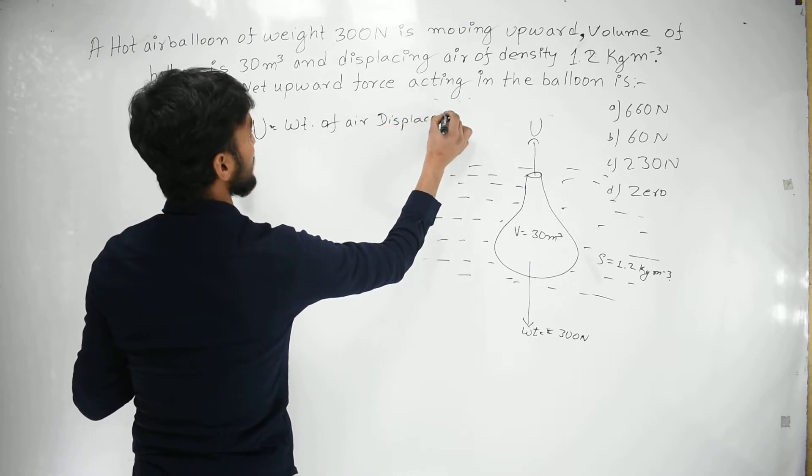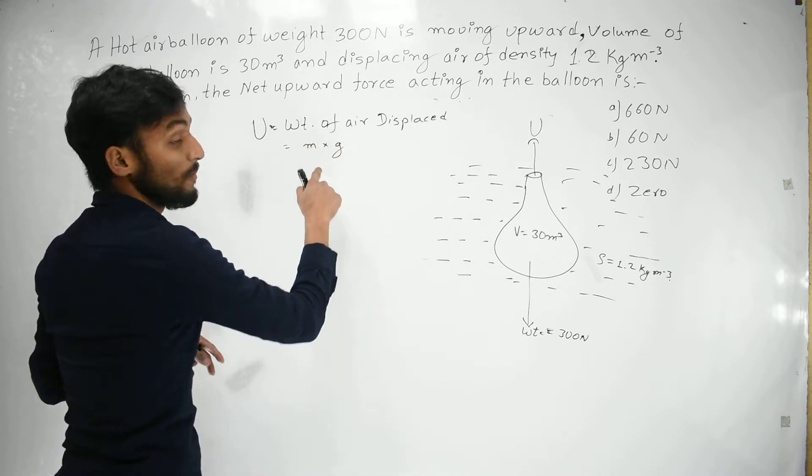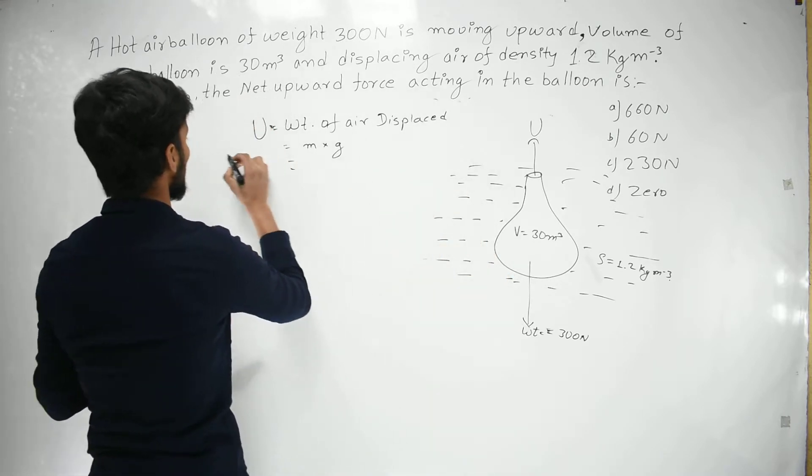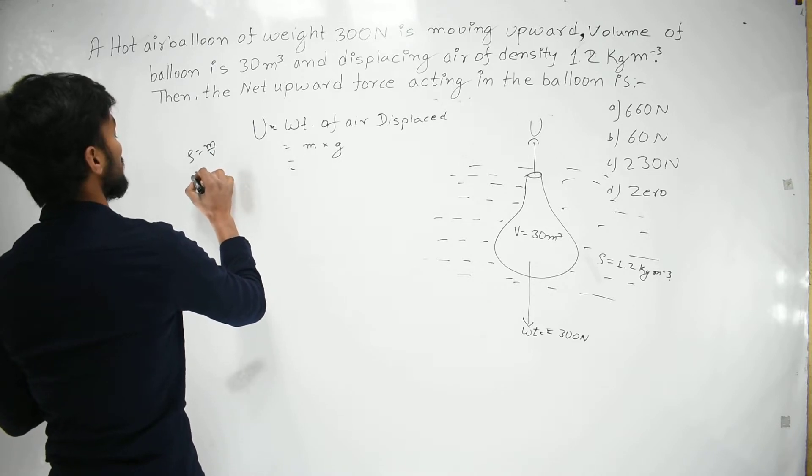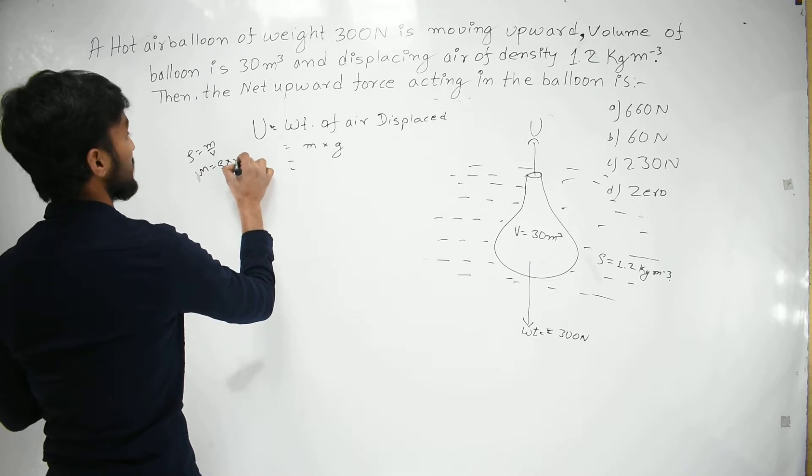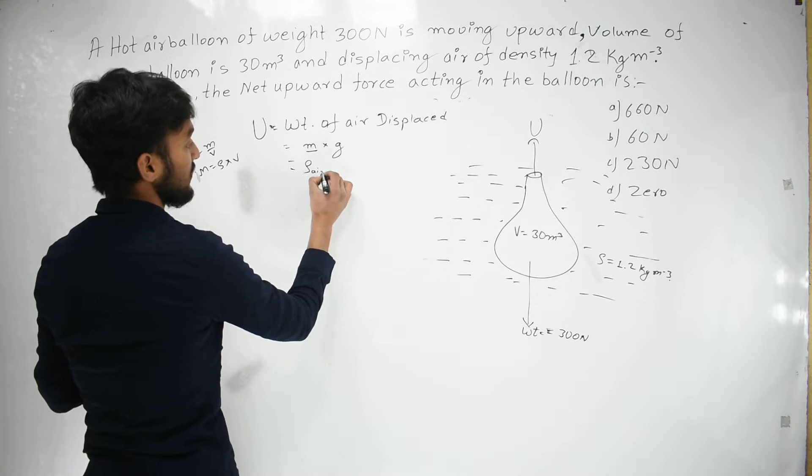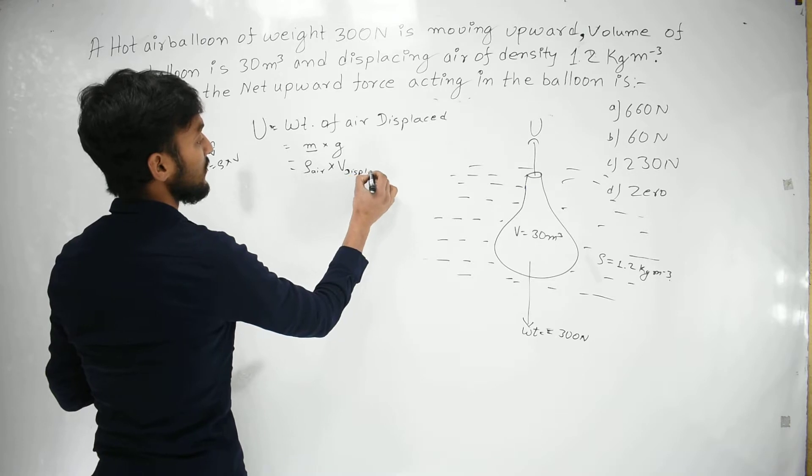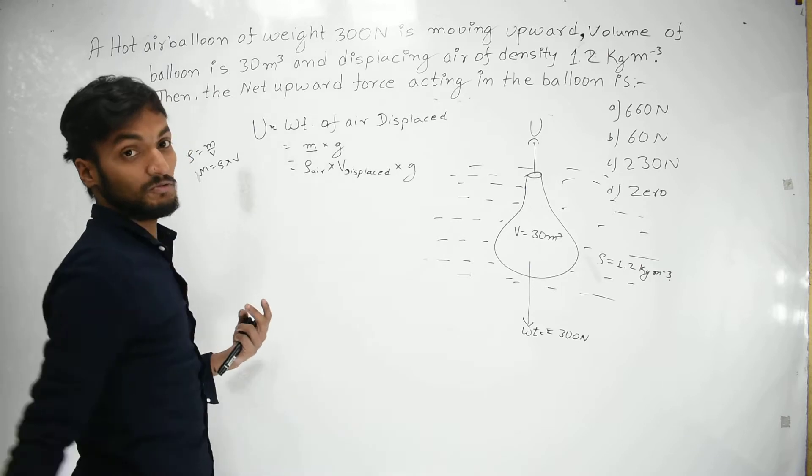Mass of air displaced. Density is equal to mass per unit volume. Mass is equal to density into volume. Mass of air displaced equals density of air into volume of air displaced into g, acceleration due to gravity.